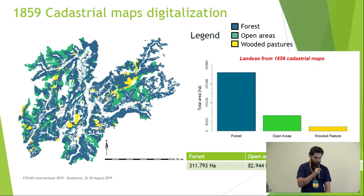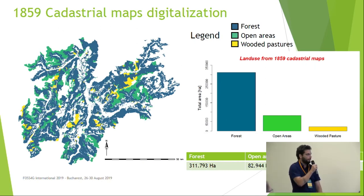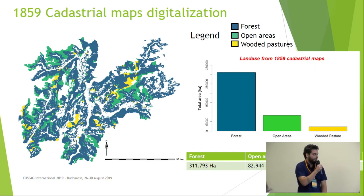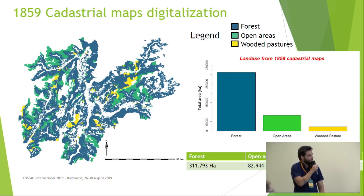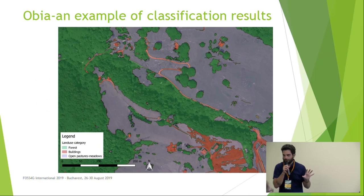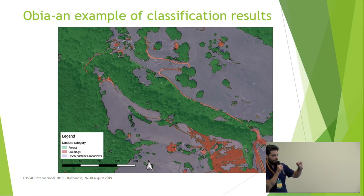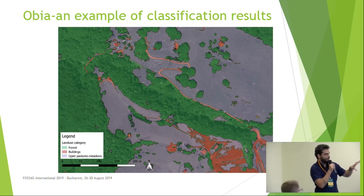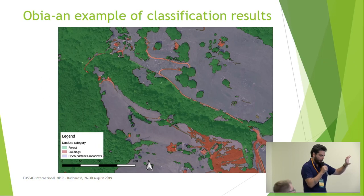The map of 1859 was completely digitalized using QGIS, and these are some statistics about the situation as it was in 1859. And here is an example of the result of the classification with the object-based approach. I carefully selected a detail which shows the level of detail that can be reached with the object-based approach.